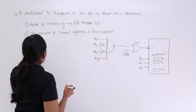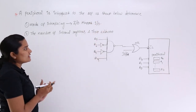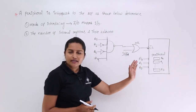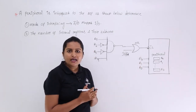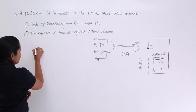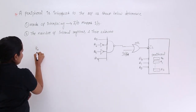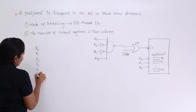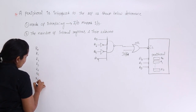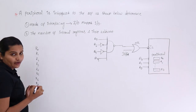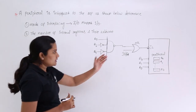Now coming to the second part — the number of internal registers. That depends on address lines A3, A1, and A0. We have a total of 8 registers: R0, R1, R2, R3, R4, R5, R6, and R7. These are the 8 registers in this peripheral.